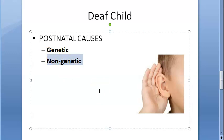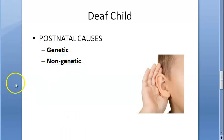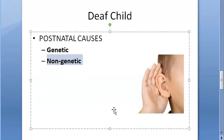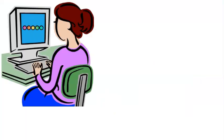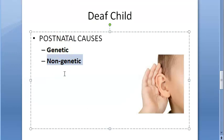Non-genetic (acquired) postnatal causes include viral infections such as measles, mumps, varicella (chickenpox), influenza, meningitis, and encephalitis. Middle ear infections such as secretory otitis media (glue ear, a sterile condition) are included. Other causes are ototoxic drugs, trauma (fracture to the temporal bone, middle ear surgery), perilymph leak, and noise-induced deafness.